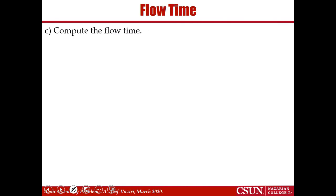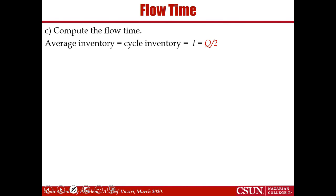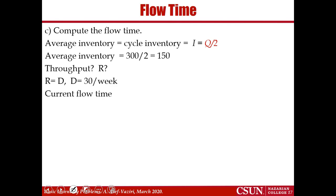Compute the flow time. Each time I order 300, inventory goes up to 300 then comes down to zero. On average, I have 300 divided by 2, which is 150. That is my average inventory. Throughput is 30 units per week. Therefore, by Little's Law: throughput times flow time equals inventory — 30 times flow time equals 150, so T equals 5 weeks.